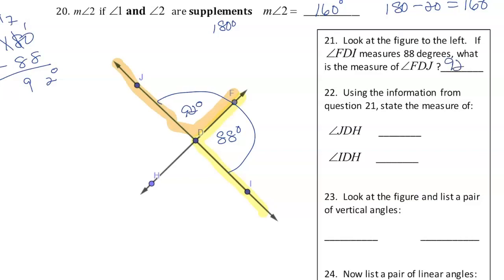Using the information from question 21, the measure of angle JDH is across from angle FDI — which is its vertical angle — so it has to be 88 degrees. And angle IDH is across from 92 degrees, therefore it has to be 92 degrees, because they are vertical angles.